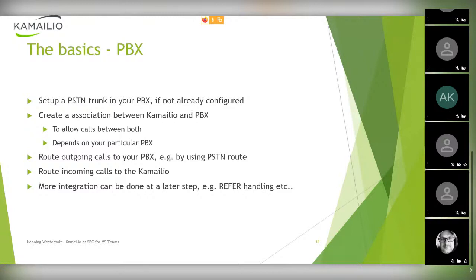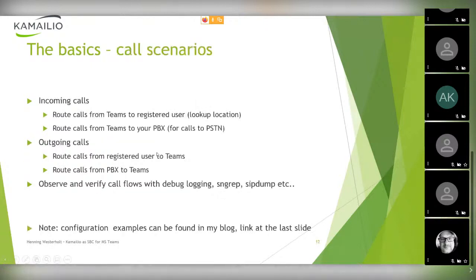For incoming calls from the PSTN coming in over the PBX, you need to route them to Kamailio of course. For basic scenarios, this is enough. More integration can be done in later steps, like refer handling and call transfer scenarios. With that, you should be able to test the basic call scenarios — incoming and outgoing calls. You should verify the signalization with the usual debugging tools. You can use SIP capture, other tools that you all know. Configuration examples and PowerShell snippets can all be found in my blog.